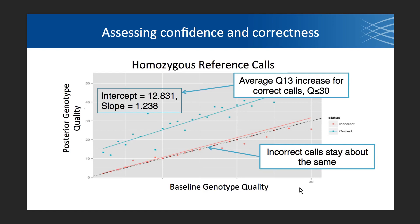For homozygous reference calls using family information from the pedigree, incorrect calls unfortunately stay about the same — though sometimes they are improved as we saw in the genotype change examples. For correct calls, we can actually boost confidence by about 13 quality points on the PHRED scale.